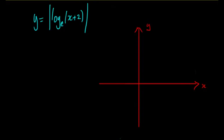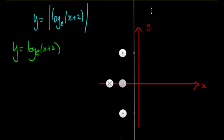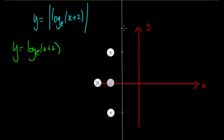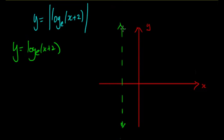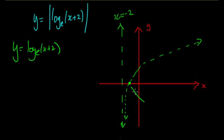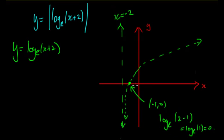Now how do we graph y = |log_e(x + 2)|? The easiest approach is to first forget the modulus and just graph y = log_e(x + 2). We have an asymptote at x = −2. The graph passes through (−1, 0), because log_e(−1 + 2) = log_e(1) = 0. So we sketch this standard logarithmic curve shifted left by 2, with the asymptote at x = −2 and the x-intercept at (−1, 0). This represents y = log_e(x + 2).